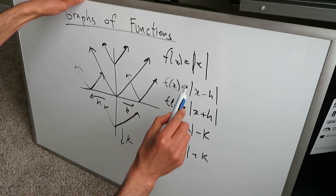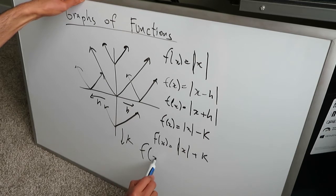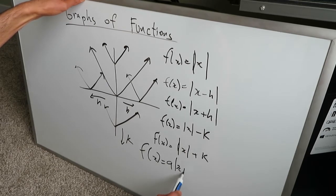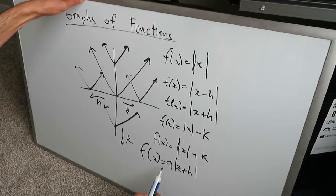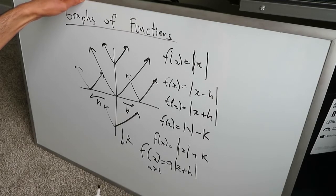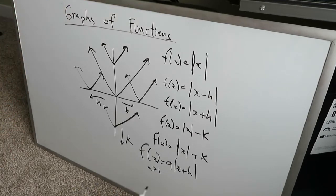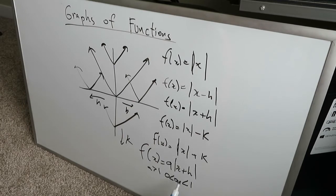You can also add a coefficient. f of x is equal to a into absolute value of x plus h. An absolute value coefficient here in a. If a is larger than 1, the graph will be compressed — compressed like a letter v. If a is something larger than 0 but less than 1, like a fractional number, you can have a vertically stretched graph. It will look like a very broad v.